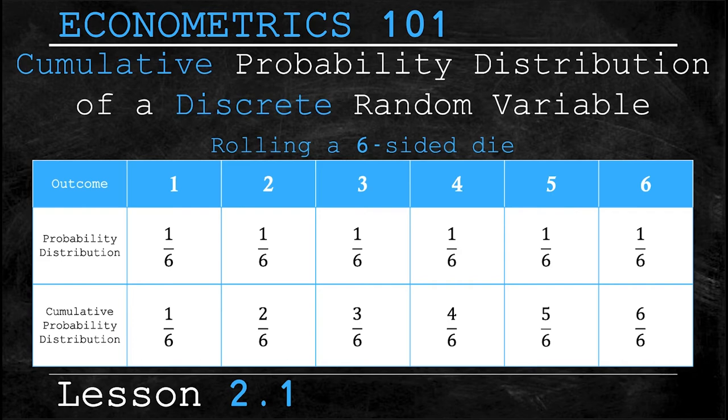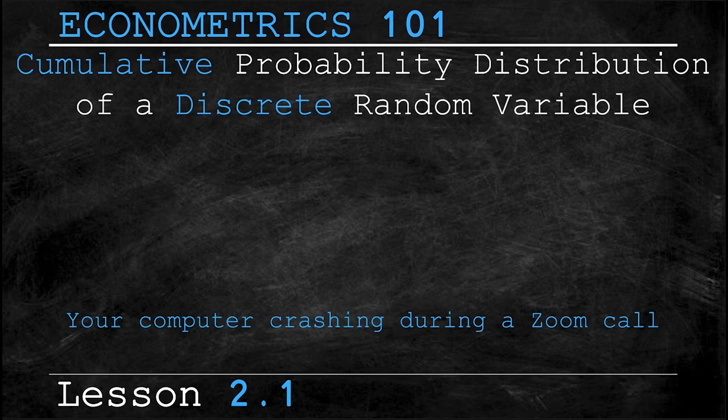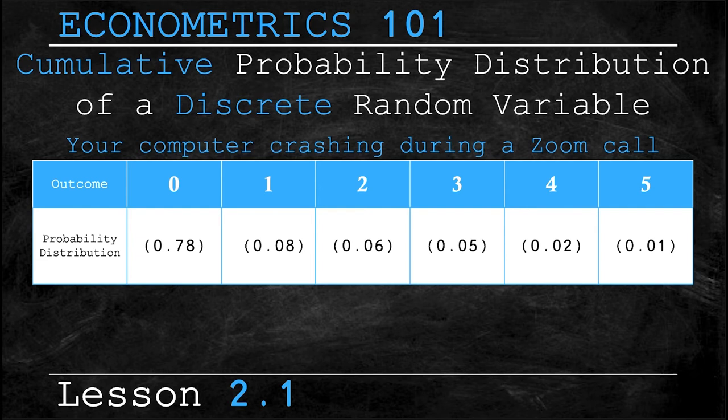Let's look at a different example still with discrete random variables but with different probability assumptions. Here we have the probability distribution that your computer crashes during a zoom call. Now there's a 78% chance of zero crashes, an 8% chance of your computer crashing once, a 6% probability it crashes twice, a 5% probability it crashes three times,